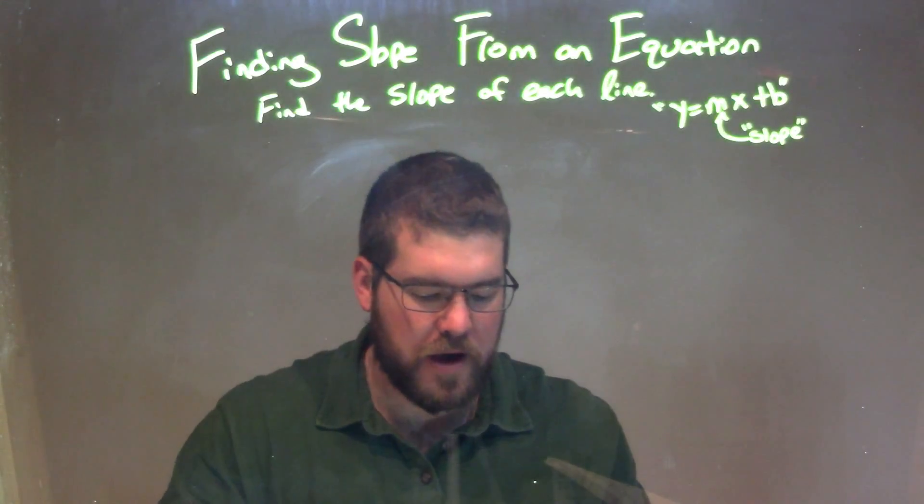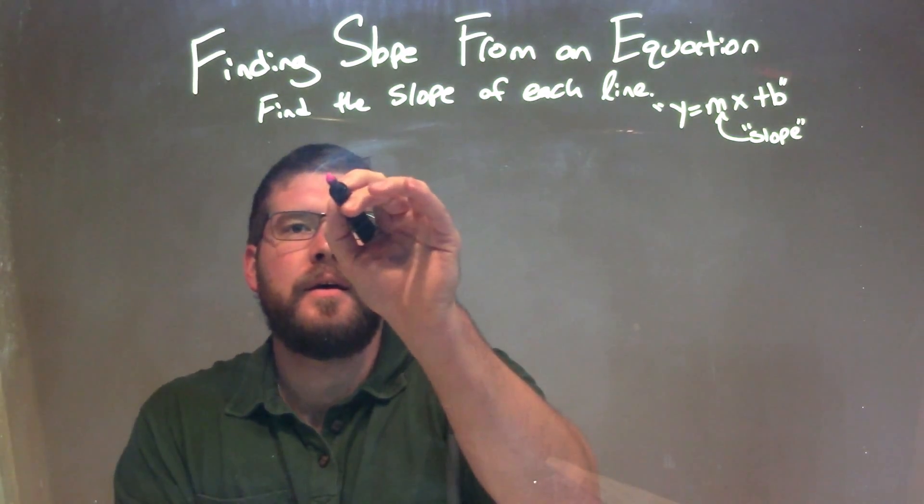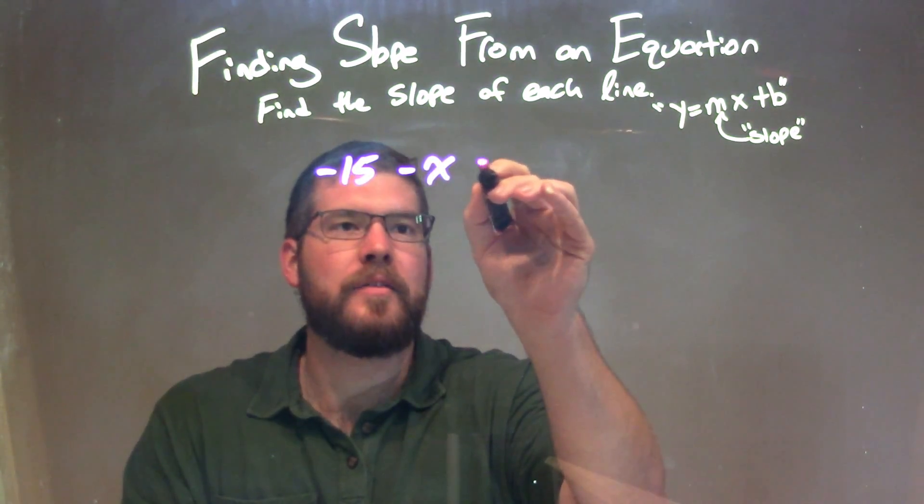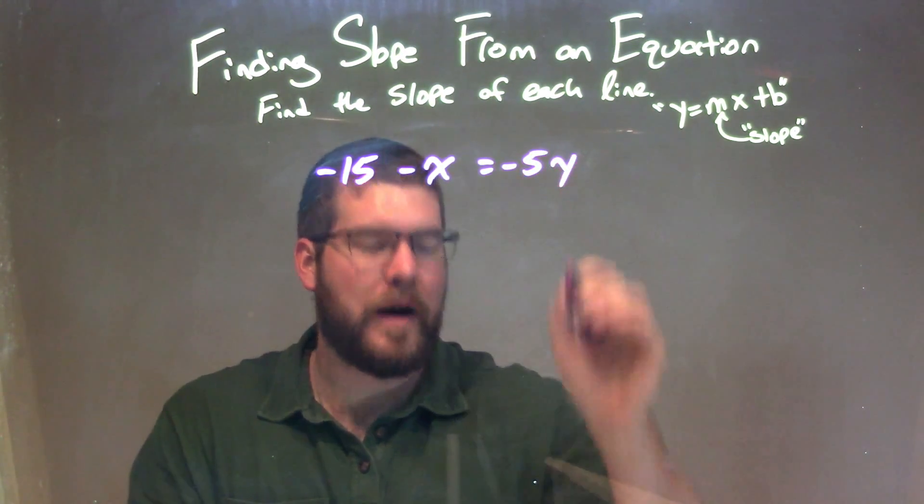We're going to find the slope of each line. So if I was given this equation: negative 15 minus x equals negative 5y.